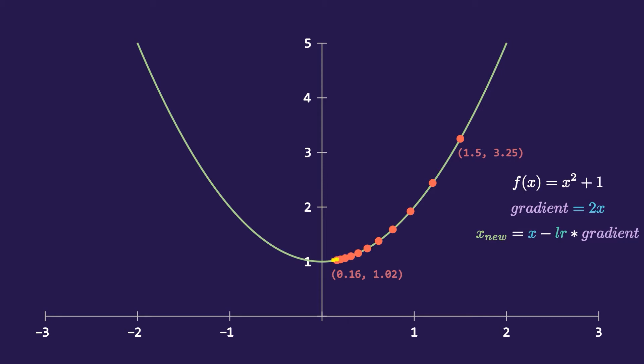What if I say that you can actually control how many big steps the point should take? You can do that by controlling this learning rate parameter. Currently the learning rate is 0.1 but if we change it to 0.2 the steps have become bigger. And if we make it even bigger the steps are now even greater.